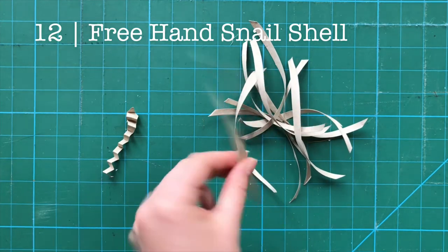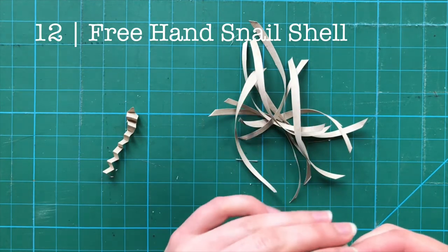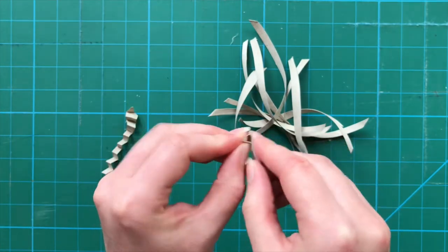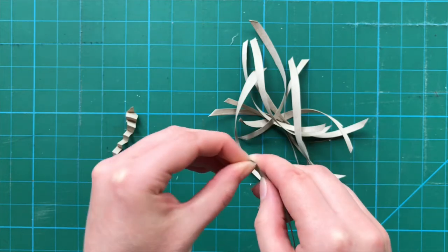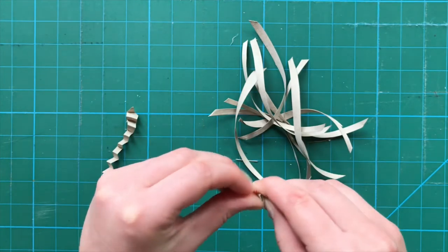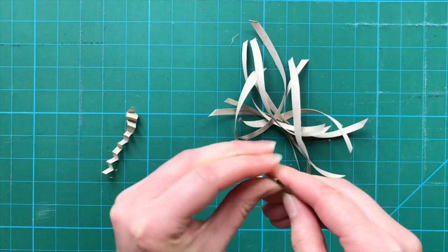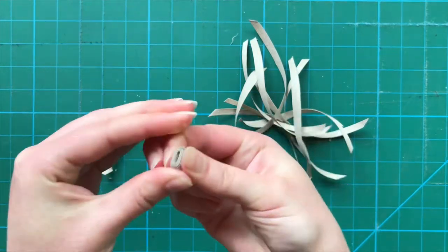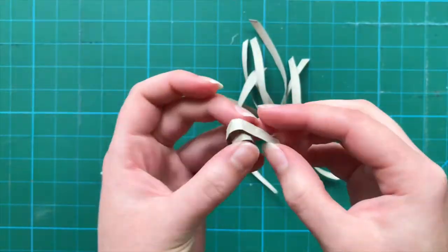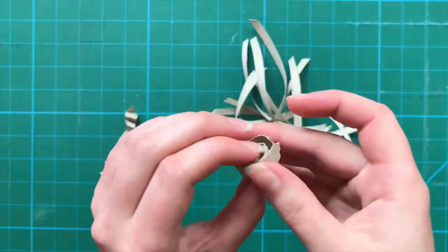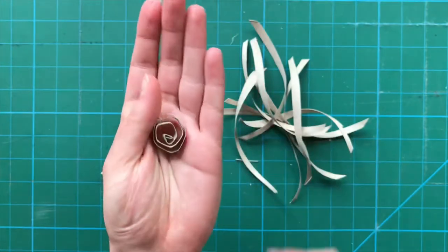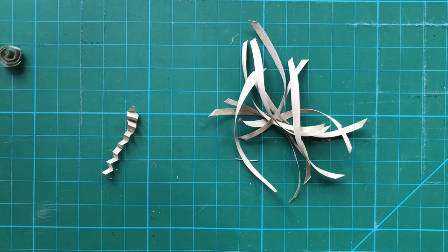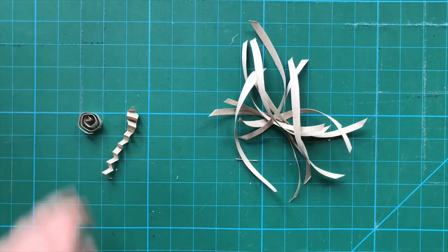Number 12, freehand snail shell. Doing nearly the same thing again, only instead of folding back and forth, you're going to fold it around itself. Compress it when finished, and uncurl when you're done. You'll have a small spiral. It can be used in all the same ways as the others, with the added benefit that sometimes it will roll away and the bird will have the opportunity to chase it. Tallulah likes doing this.